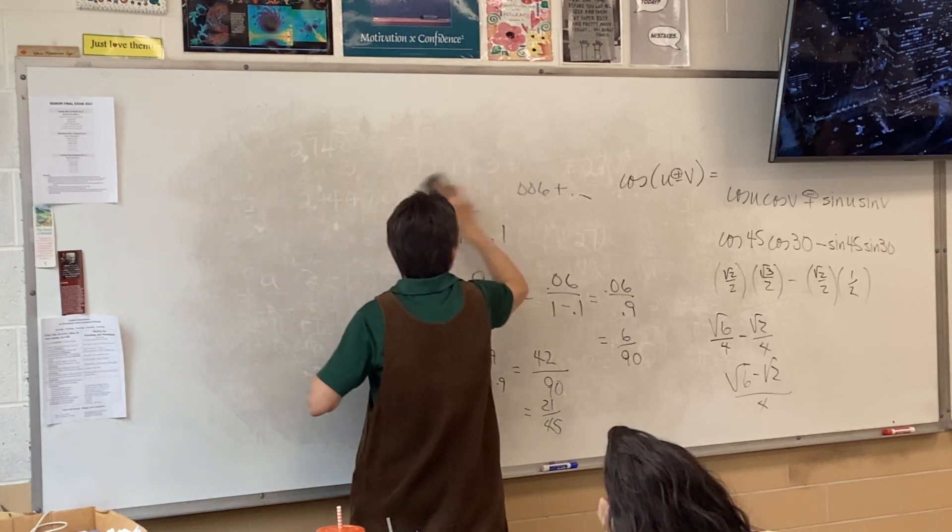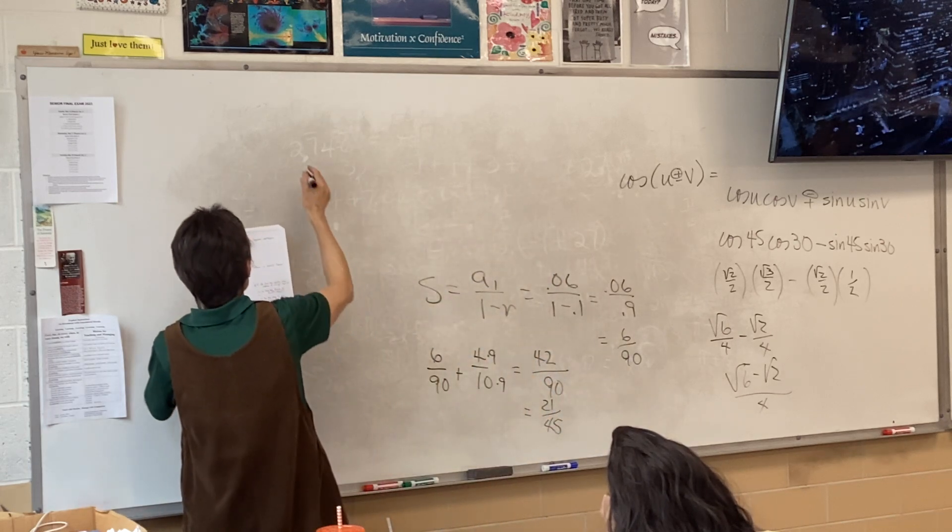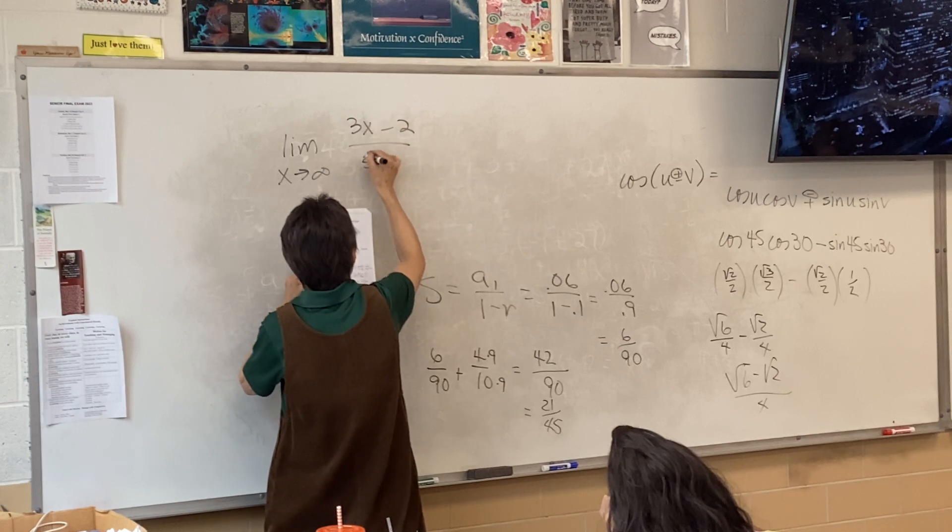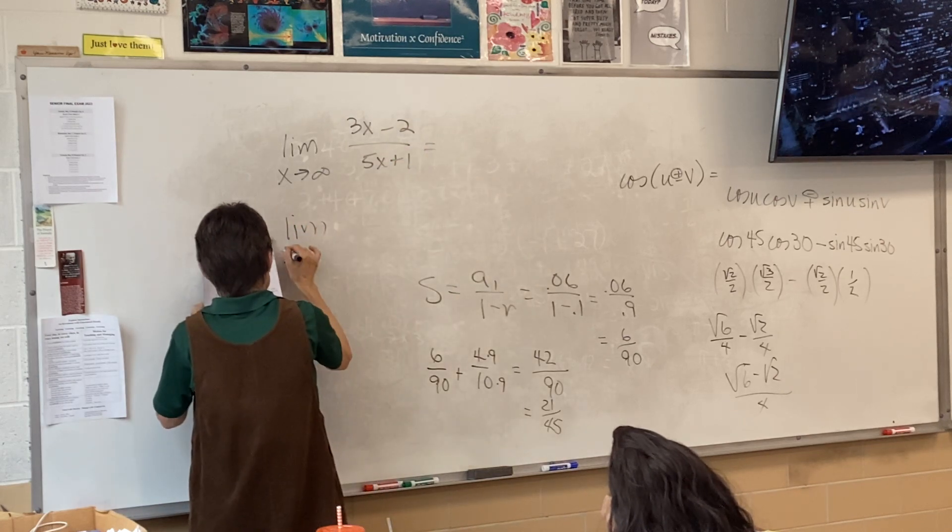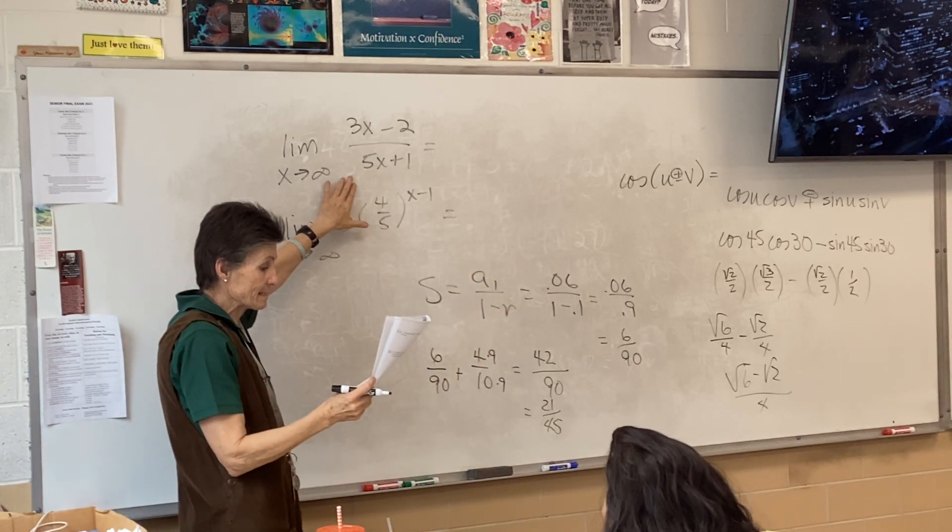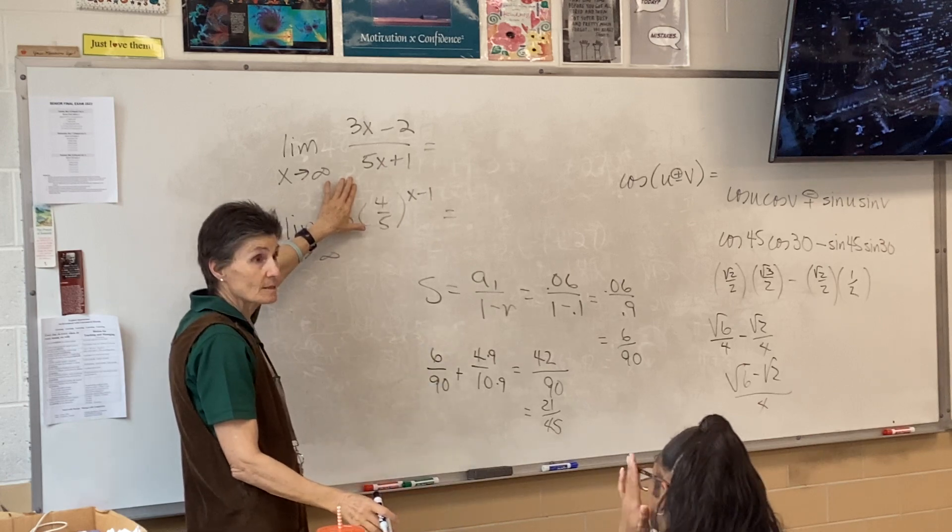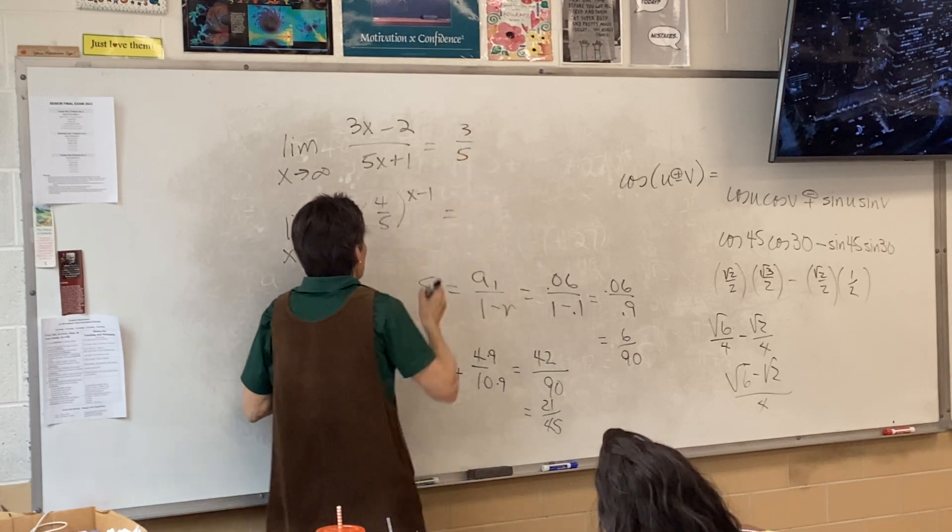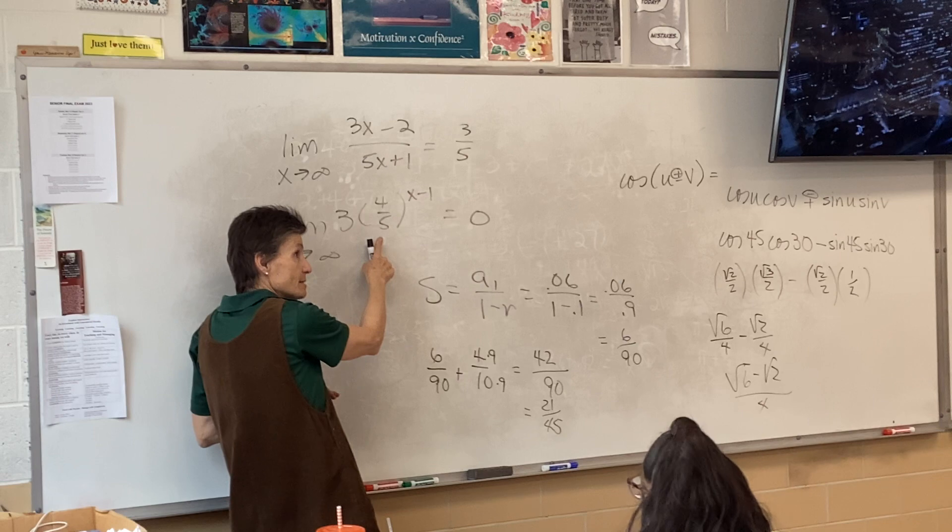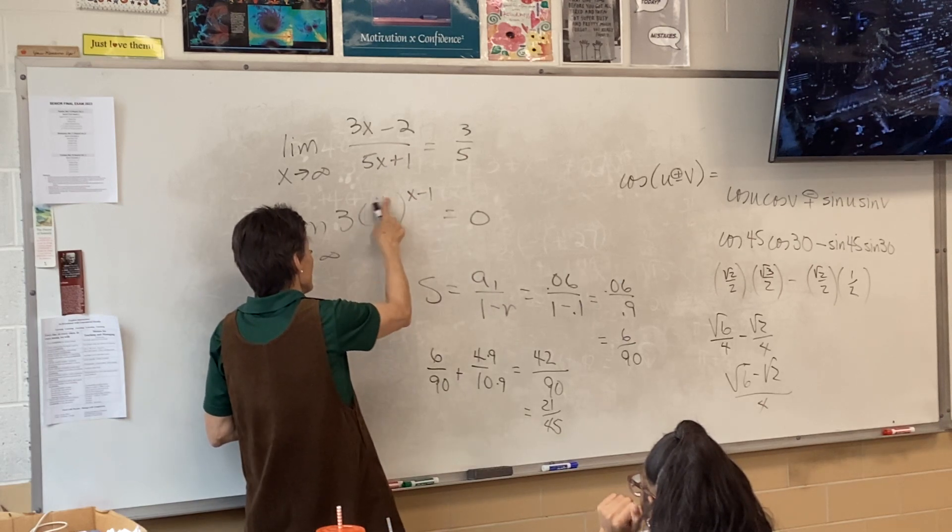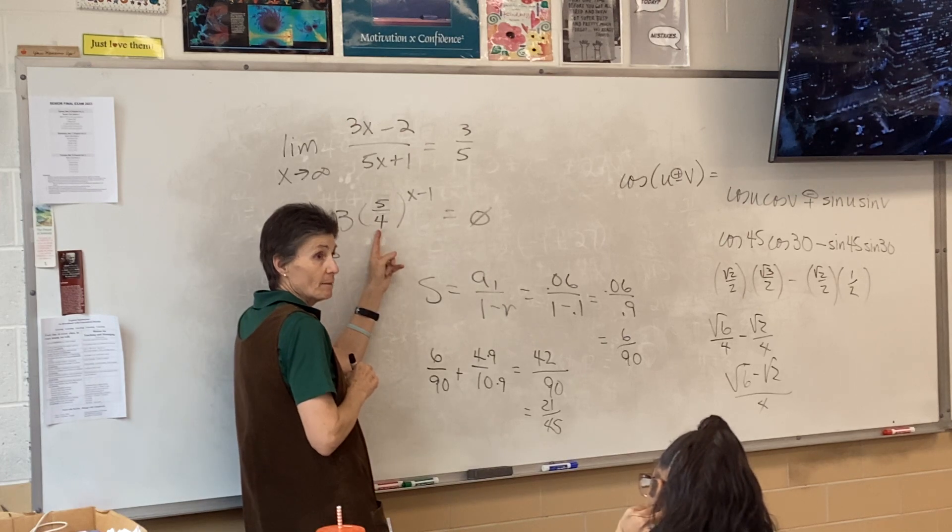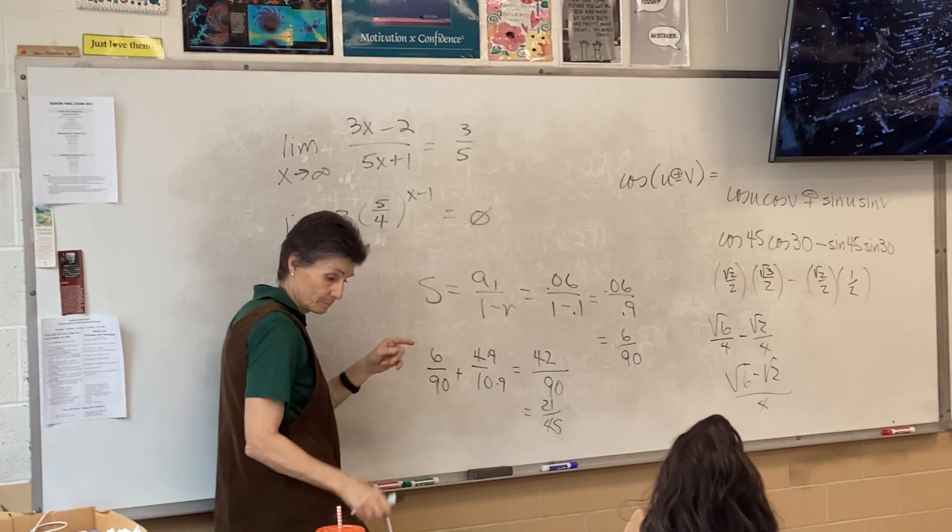I want to look at 27. These limits, it's really hard to give partial credit on these limit problems. And they're so easy. What's the limit of that top one? This is 27A. 3 fifths. The limit is 3 fifths. What's the limit of this one? This is a different kind of problem. Zero. The limit is zero. And it's zero because that number right there is less than 1.